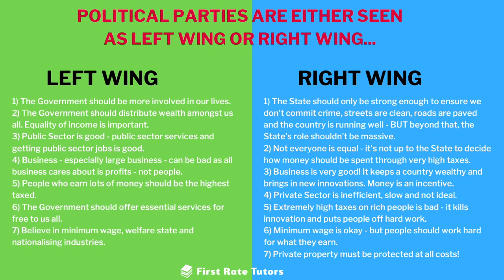This is different to right-wing values and beliefs. Broadly speaking, right-wing people believe that the state is important and should have a role, but mainly in providing things like ensuring roads are paved, good infrastructure, clean streets, and adequately funded police. Beyond that — such as providing free healthcare, schools, or deciding how much tax we pay — that is not the state's job, that is our job.